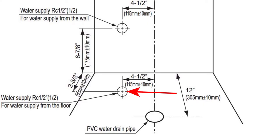That four and a half inches is true regardless of whether the water supply is in the floor or on the wall. If it's on the wall, you'll want to make sure that along with being four and a half inches off center it is also six and seven eighths inches up.